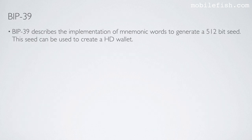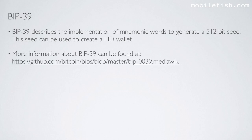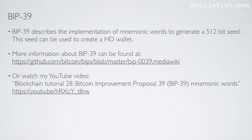Bitcoin Improvement Proposal 39 describes the implementation of mnemonic words to generate a 512-bit seed. This seed can be used to create a hierarchical deterministic wallet. More information about Bitcoin Improvement 39 can be found at this location, or watch my YouTube video Blockchain Tutorial 28, Bitcoin Improvement Proposal 39, mnemonic words.